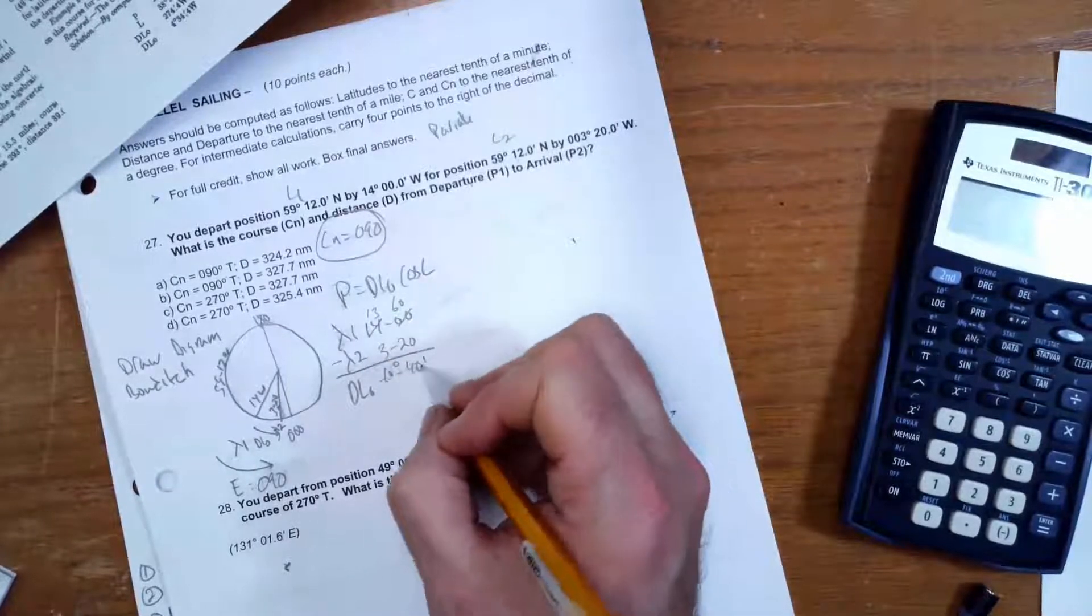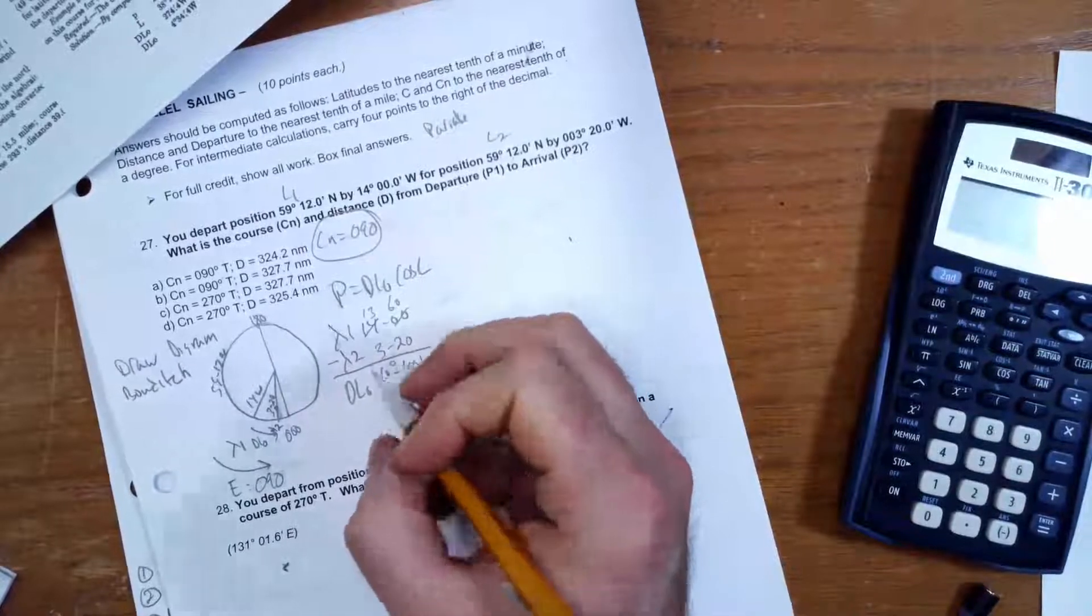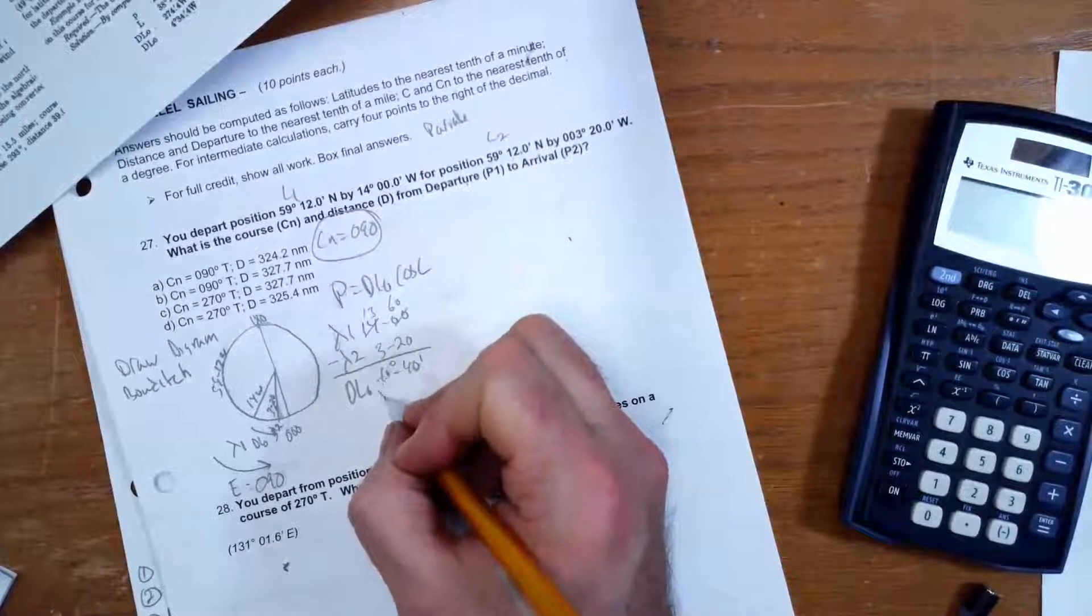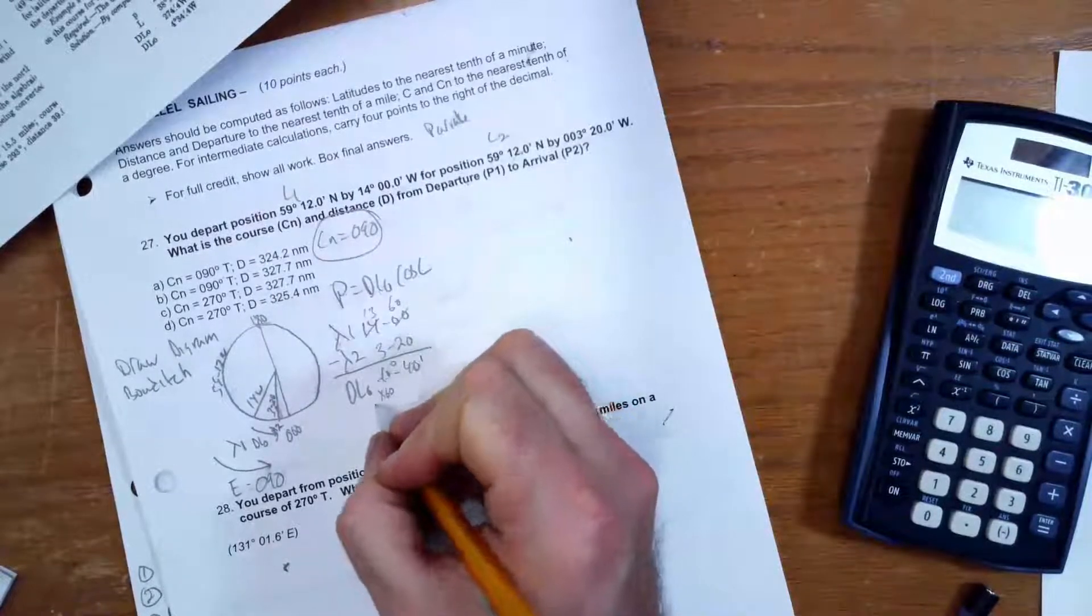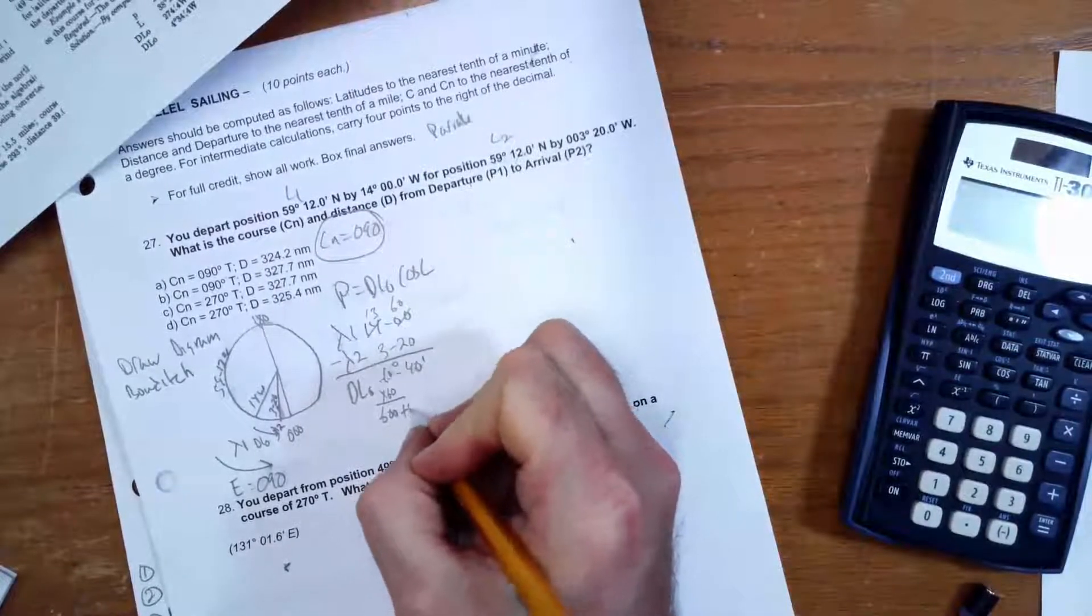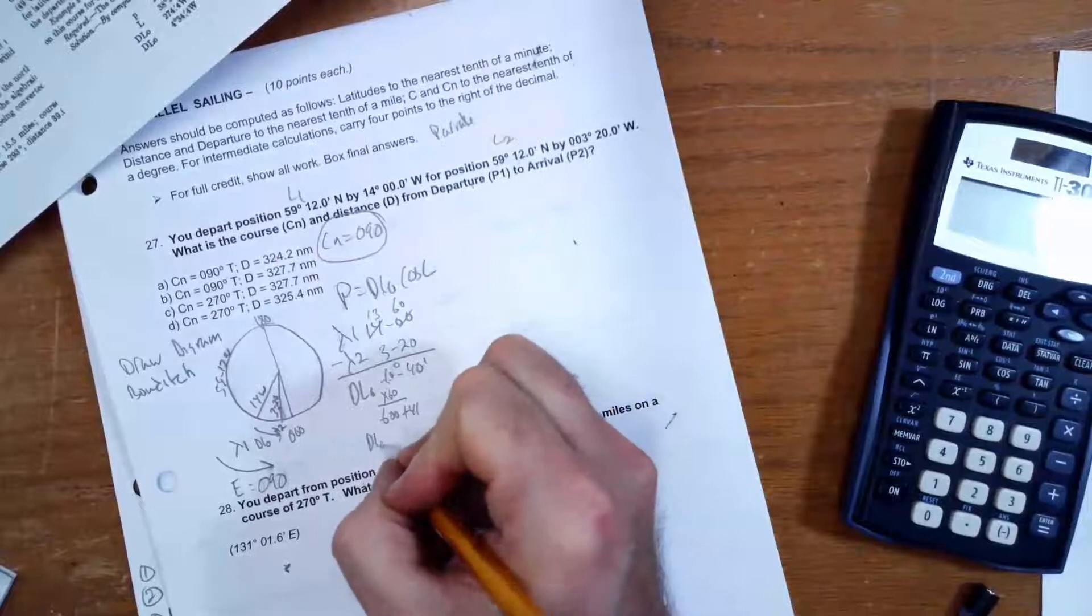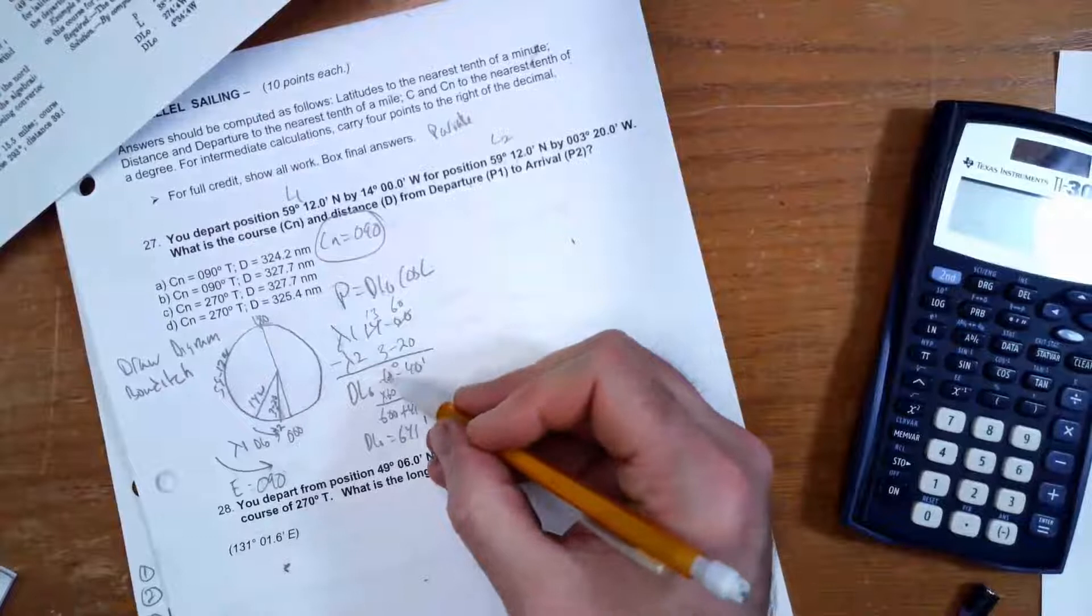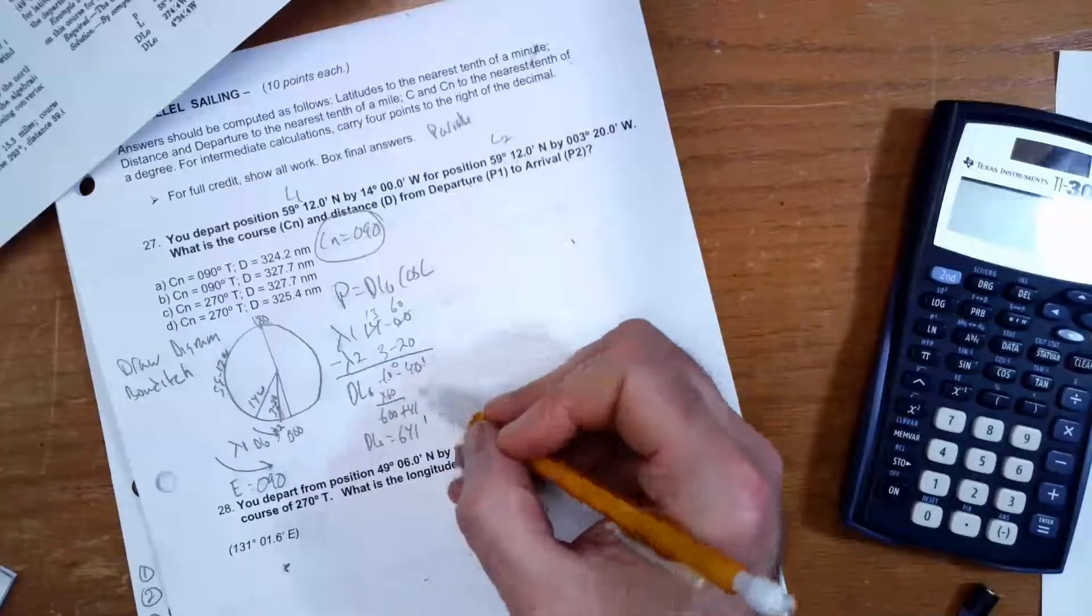My ultimate answer I want to be in minutes, so I'm going to take 10°40' and convert it to minutes. That part's already in minutes, this is in degrees. There's 60 minutes per degree, so I'm going to multiply the 10 times 60, that's going to give me 600 plus 40, so my DLo is 640 minutes of arc, which is 10°40' of arc, those are synonymous.